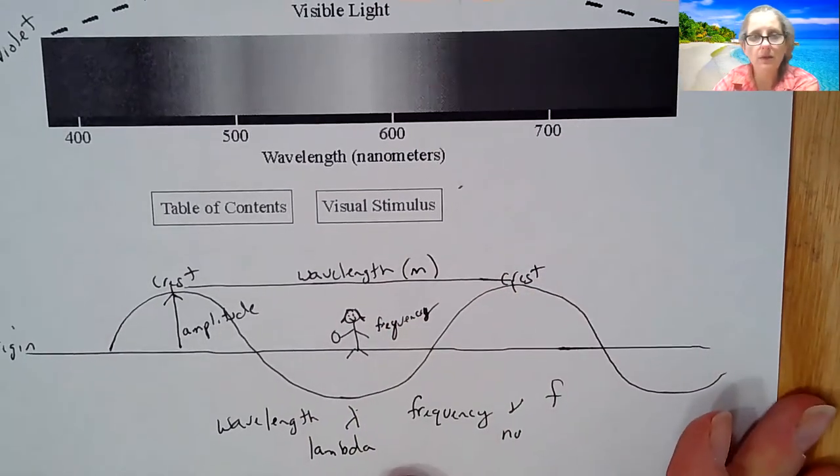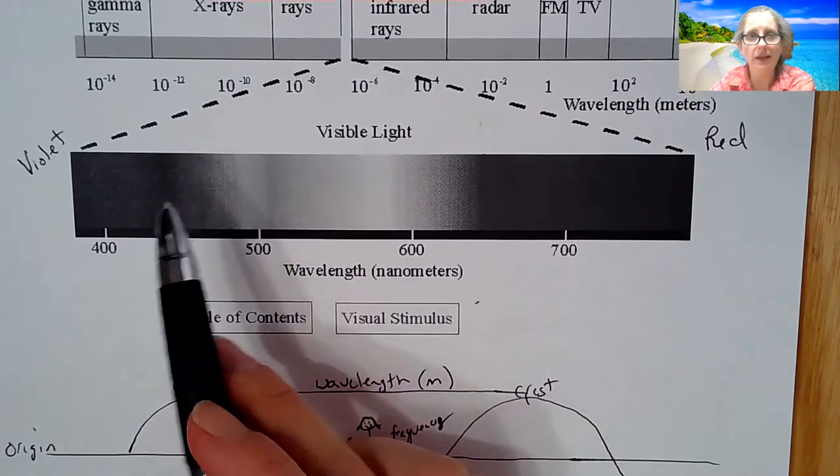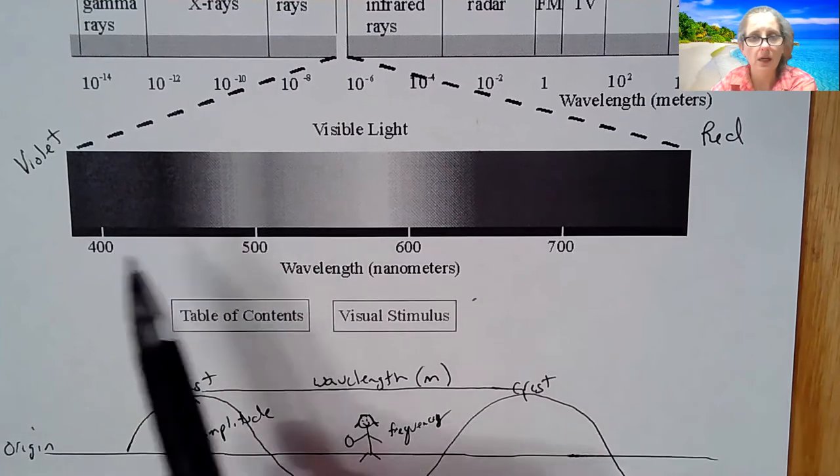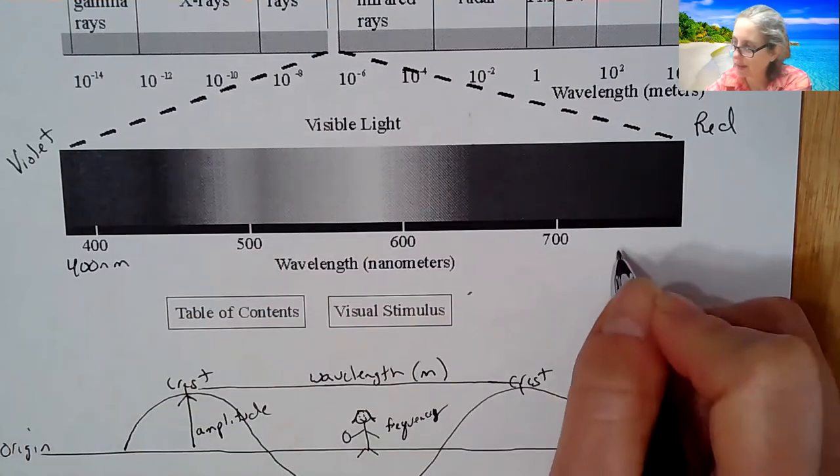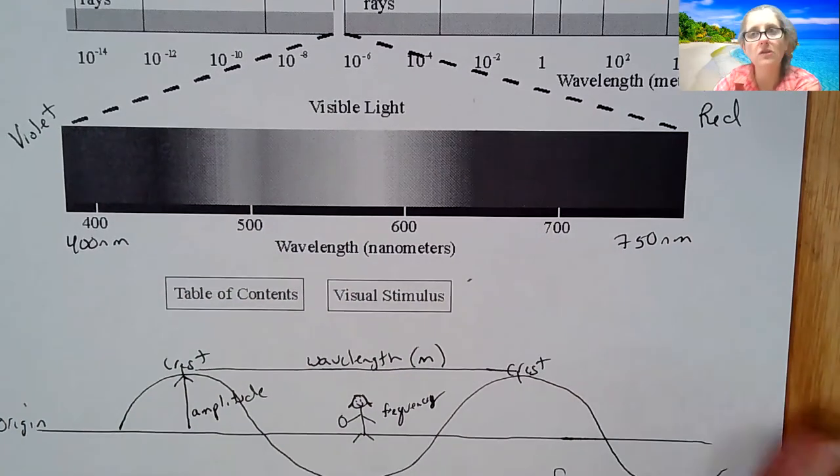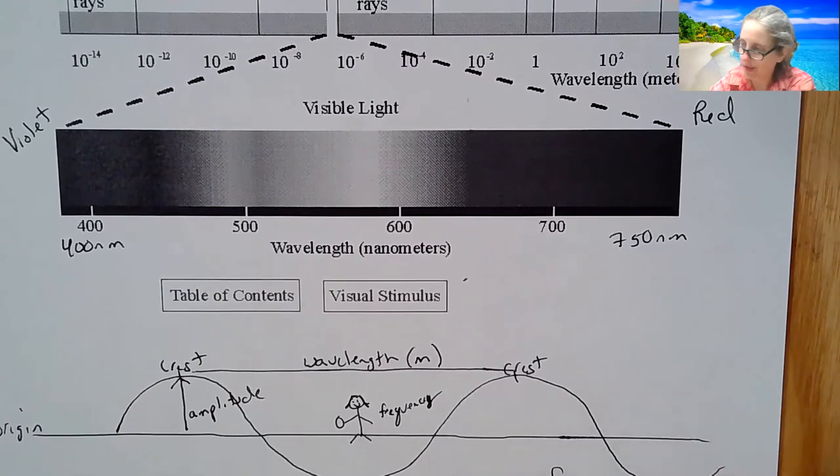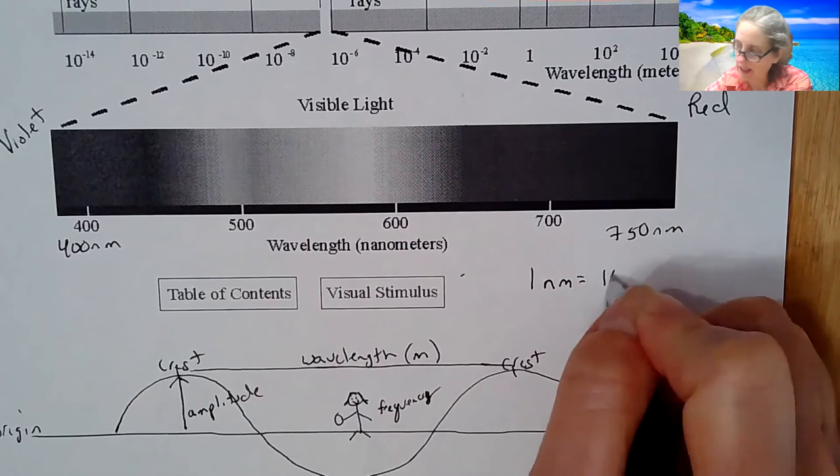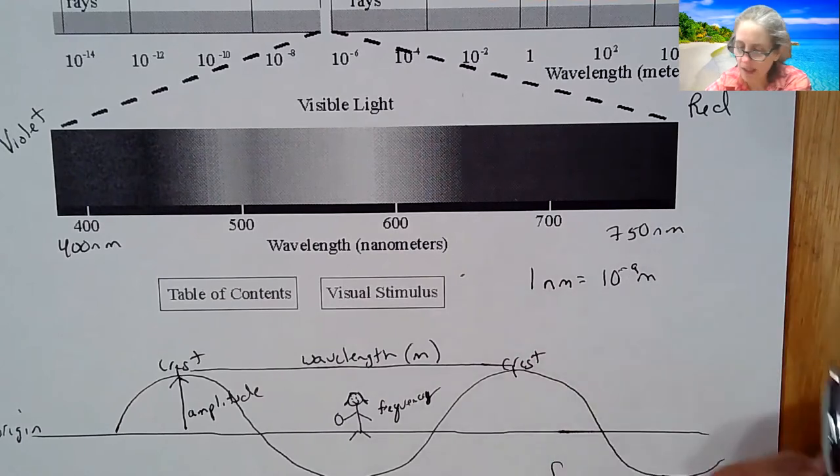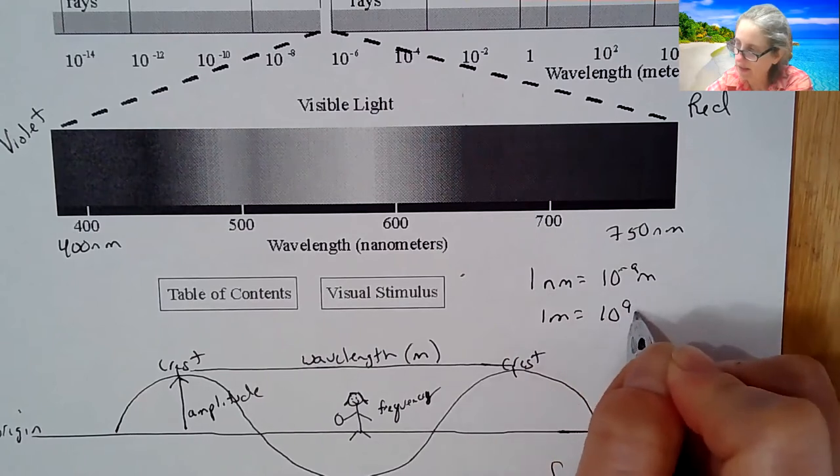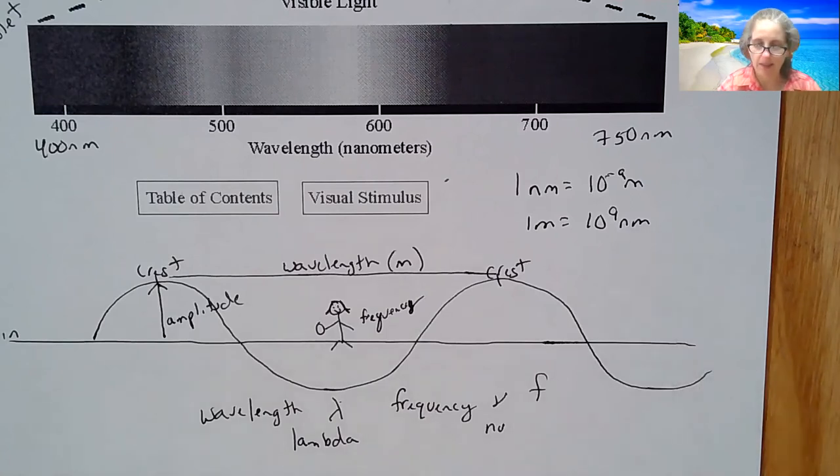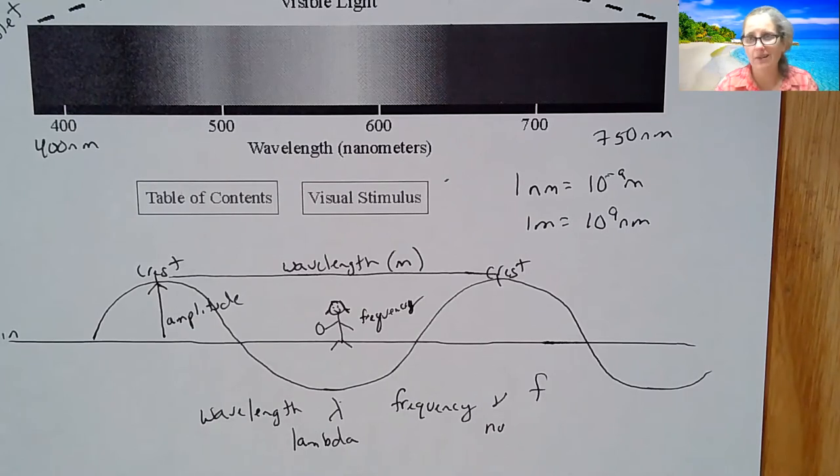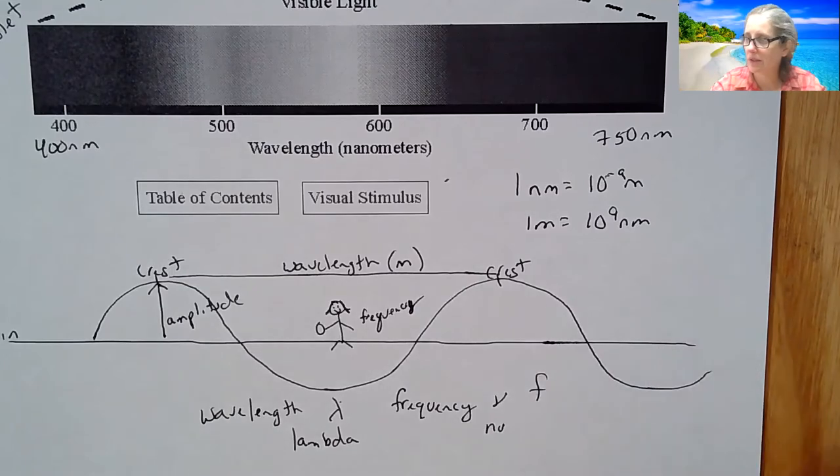We are going to be seeing, especially when we're talking about visible light violet to red, something called a nanometer. This is about 400 nanometers to about 750 nanometers is the visible range and you do need to know those numbers. One nanometer is 10 to the negative ninth meters and one meter is 10 to the ninth nanometers. We're going to use the nanometer here and then next chapter we're going to be doing the picometer.